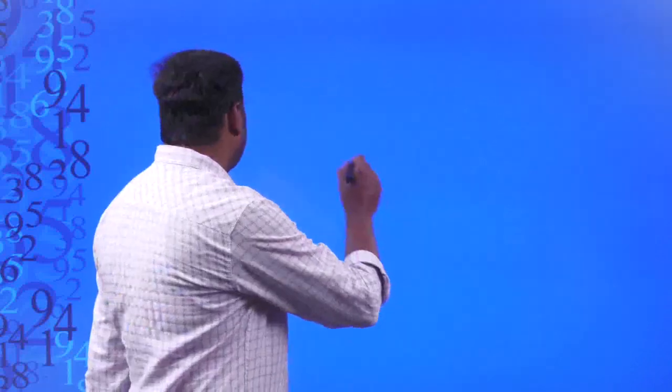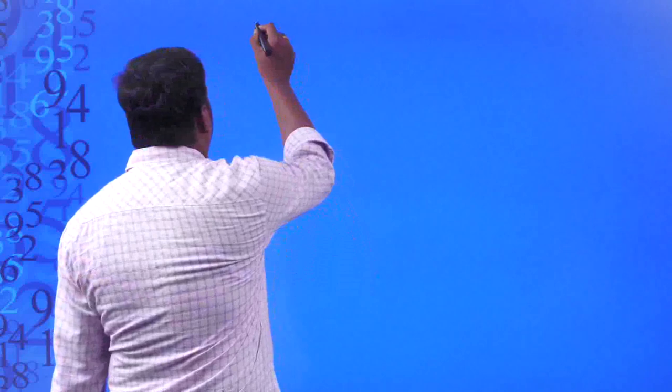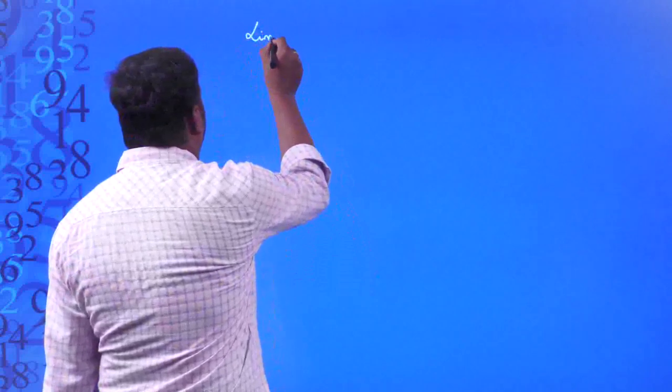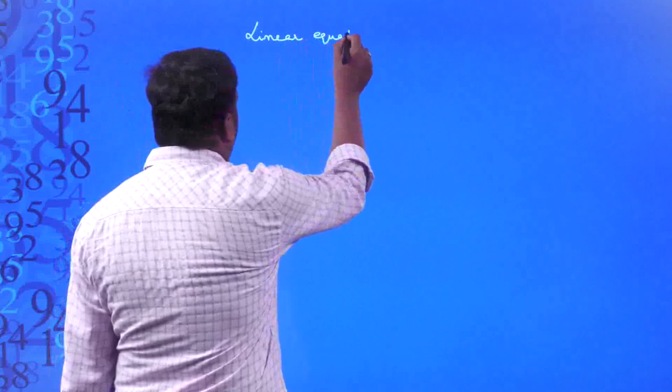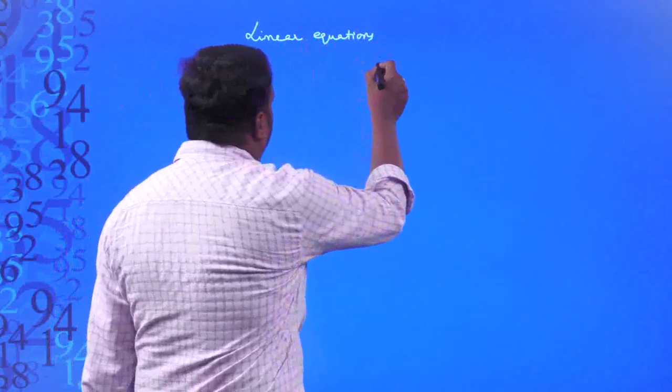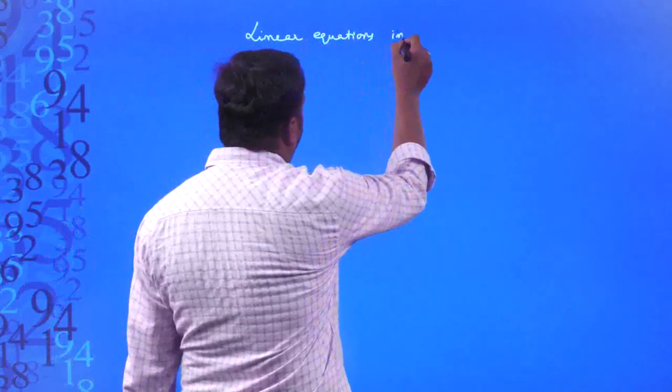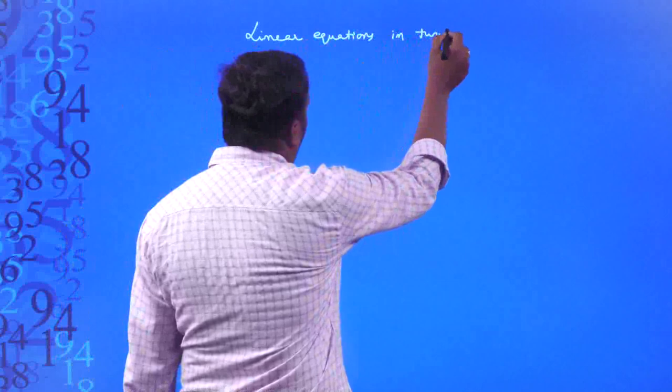Hello children, today we are going to discuss the fourth chapter of our Grade 9 CBC curriculum, that is linear equations in two variables.